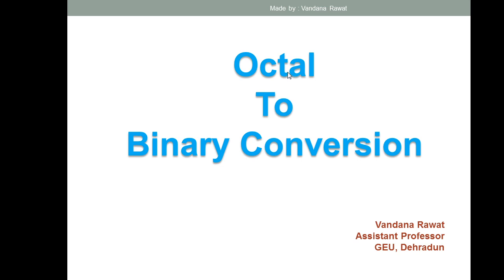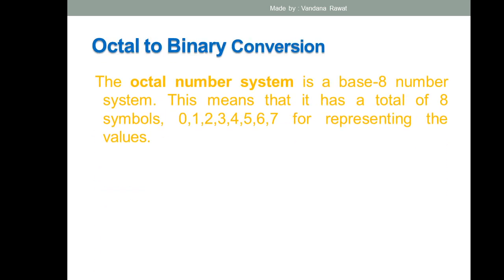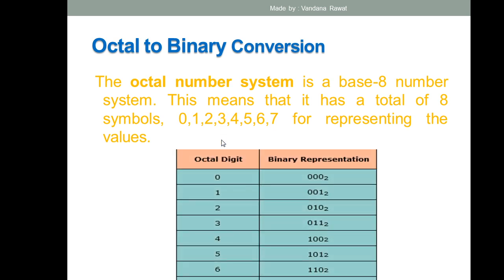In today's lecture we'll look at how to convert an octal number into binary. First, what do you mean by the octal number system? In the octal number system, the base is 8. This means it has a total of 8 symbols, starting from 0 and going up to 7. That is the range. For example, the number 156 — you can check whether it is an octal number because all its digits fall within that range.